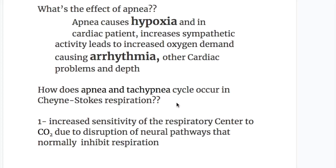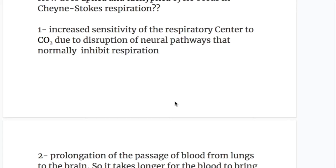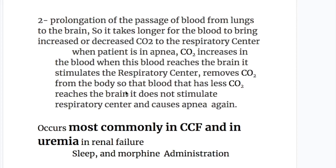How does the apnea and tachypnea cycle occur in Cheyne-Stokes respiration? Number one, there is increased sensitivity of the respiratory center to carbon dioxide due to disruption of neural pathways that normally inhibit respiration. Number two, there is prolongation of the passage of blood from the lungs to the brain, so it takes longer for the blood to bring increased or decreased carbon dioxide to the respiratory center.